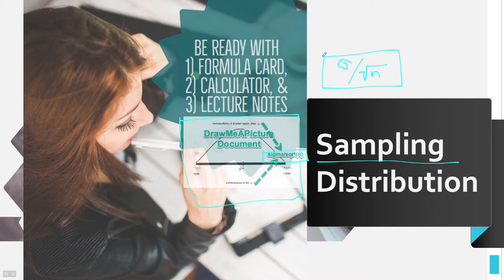Coming into chapter 7, if you have a firm grasp on chapter 6, your sampling distribution chapter is going to be much easier. If you do not understand normal distributions, it's going to be a real struggle for understanding sampling distributions, because we're going to use so many of the same concepts, ideas, formulas, and so forth.